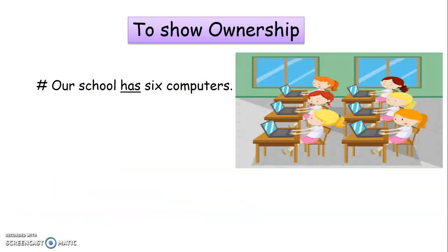Next, to show ownership — it indicates what a person has acquired or owns. For example, 'A school has six computers.' Here, 'school' is a singular noun, so we make use of the verb 'has'. Has shows what the school owns, that is six computers.